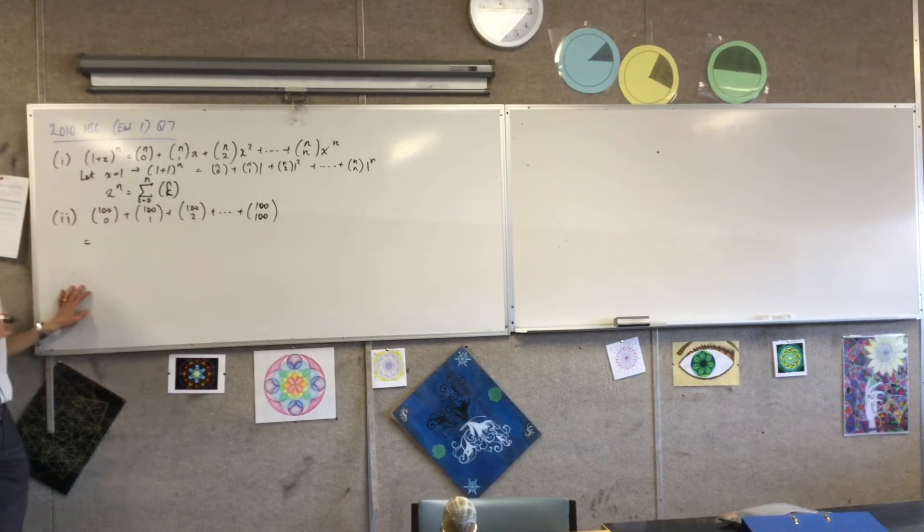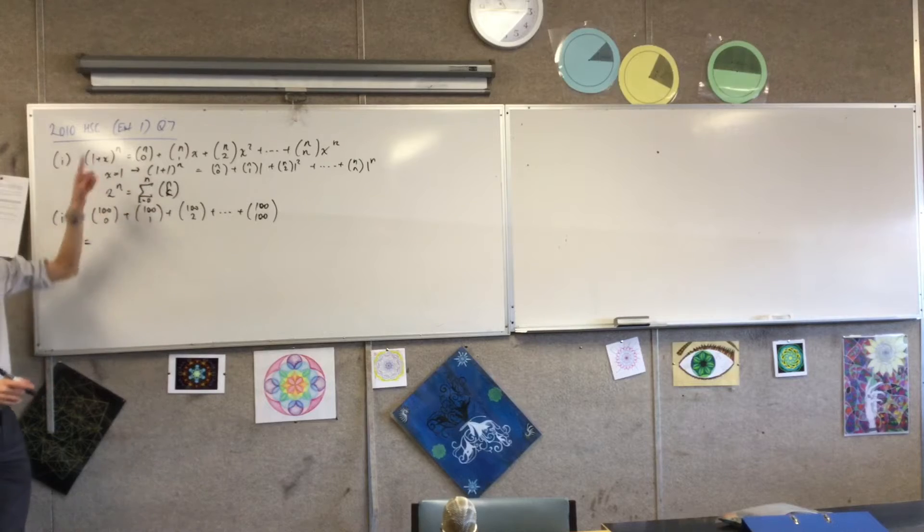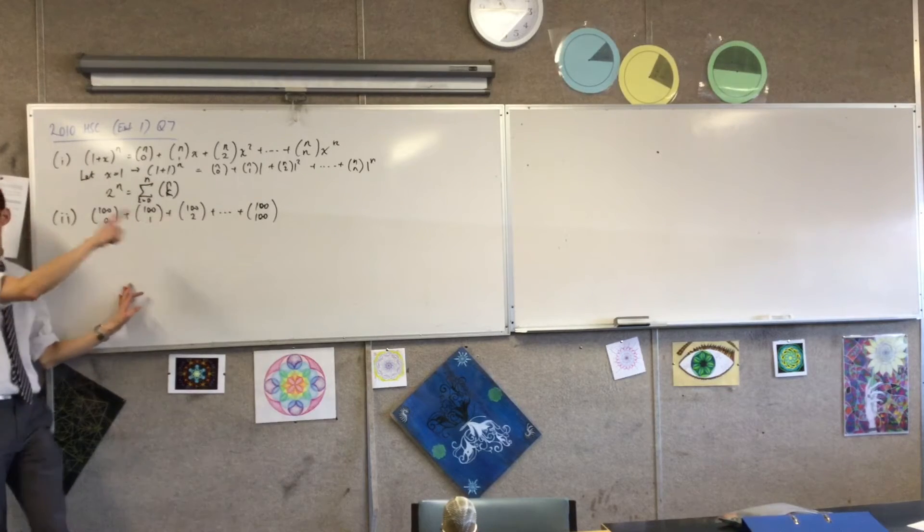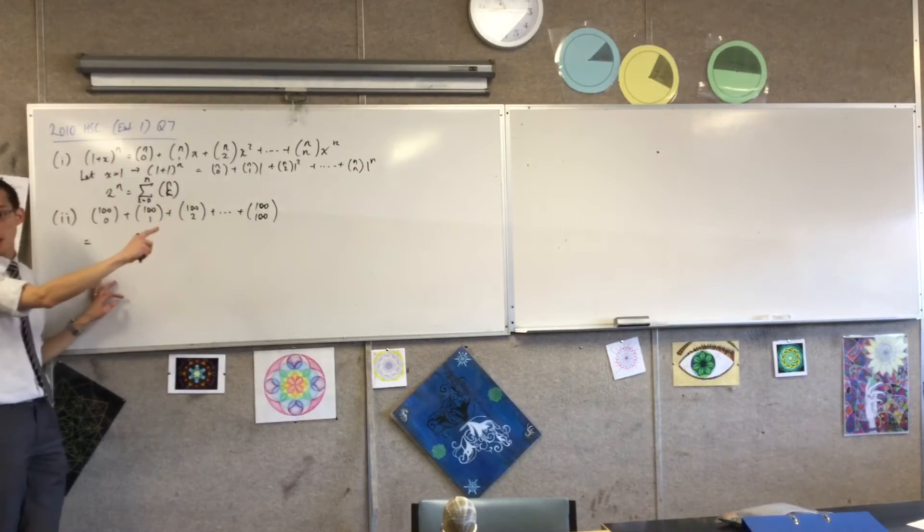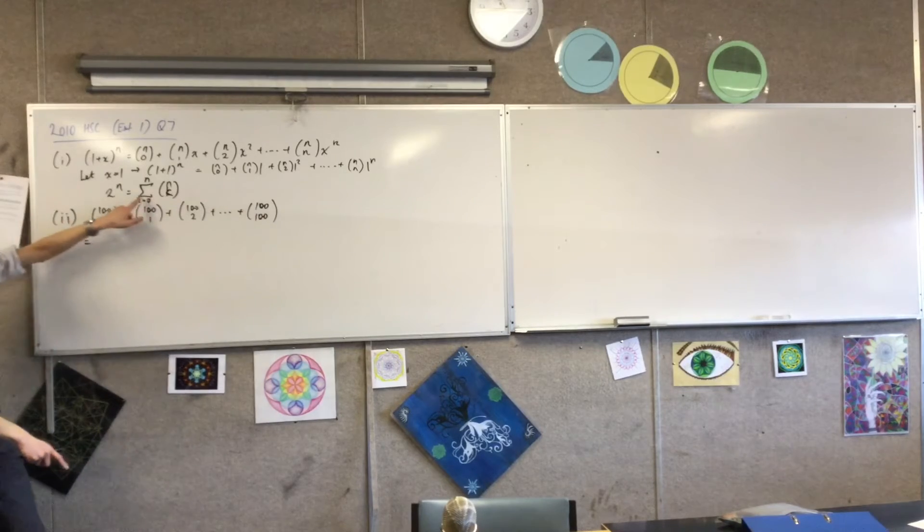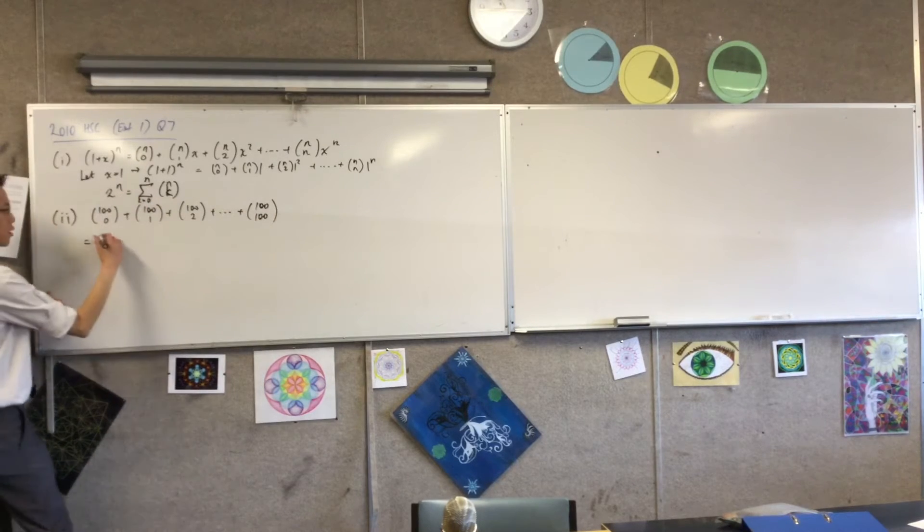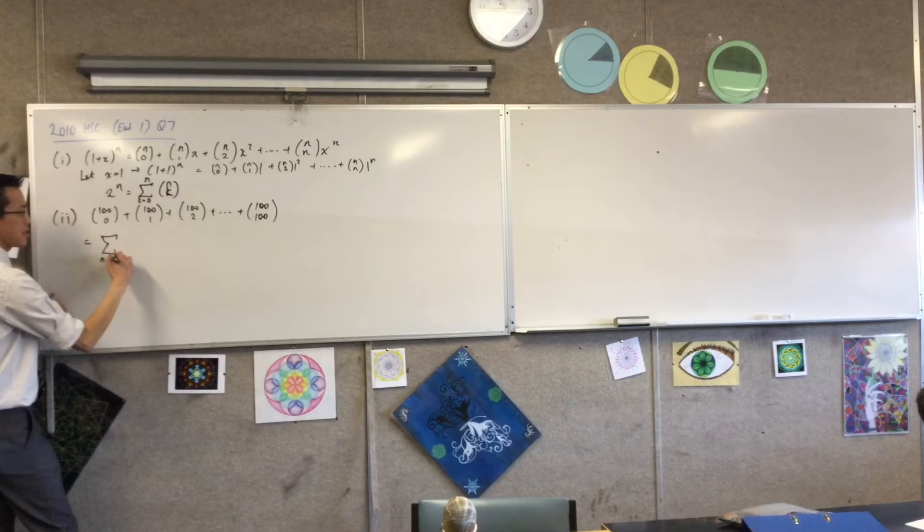Okay, so when n equals 100, you can use this. Now I prefer, I just like starting from this, like this is what they're asking me to work with, and I can see that this is really just this with a certain value.